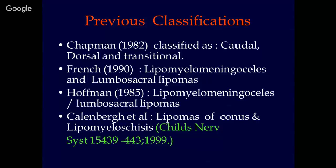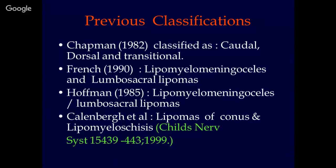Before we proceed to the new classification, we should have a brief overview of previous classifications that have been proposed and how this new classification differs from them. The first classification of spinal lipomas was proposed by Paul Chapman in 1982, who classified spinal lipomas into caudal, dorsal, and transitional. Barry French classified them as lipomyelomeningoceles and lumbosacral lipomas. Hoffman also classified them as lipomyelomeningoceles and lumbosacral lipomas. Kallenberg and colleagues classified them as lipomyelomeningoceles and lipomas of the conus.